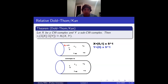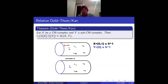The thing I'm calling the Dold-Thom-Kahn theorem — Manuel and I had a discussion of what the actual Dold-Thom theorem and the actual Dold-Kahn theorem say, and this is sort of a little bit in between the two of them. The theorem, in its relative version which implies the absolute version, states that the homotopy groups of the free abelian group on a space X modulo the free abelian group on a subspace Y are the same as the relative homology groups.